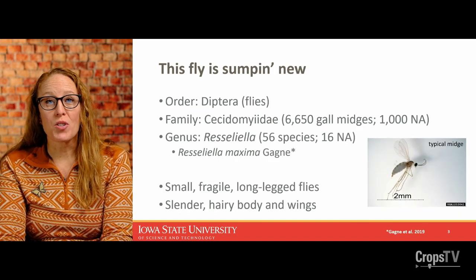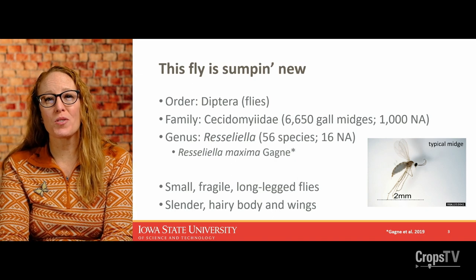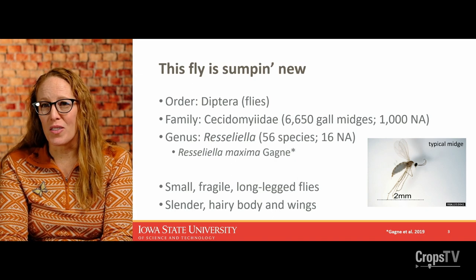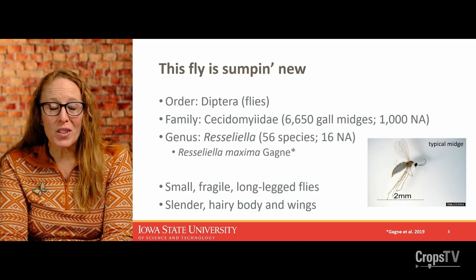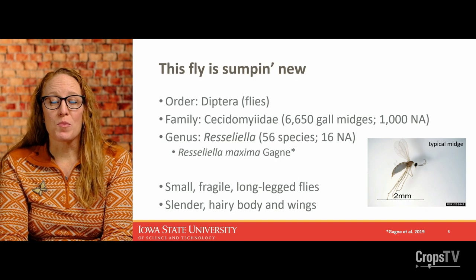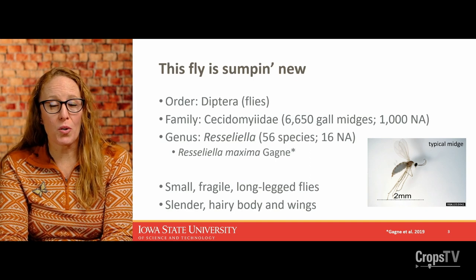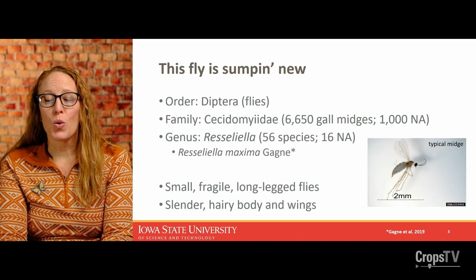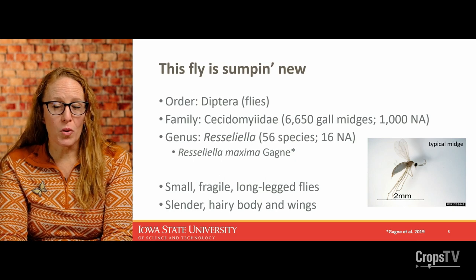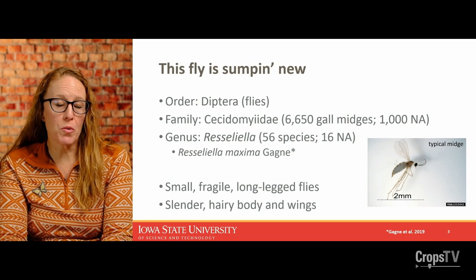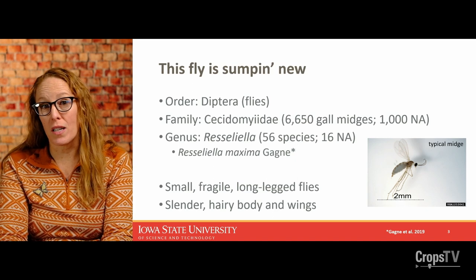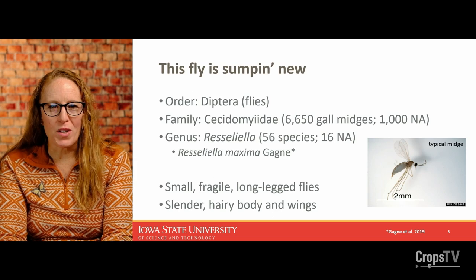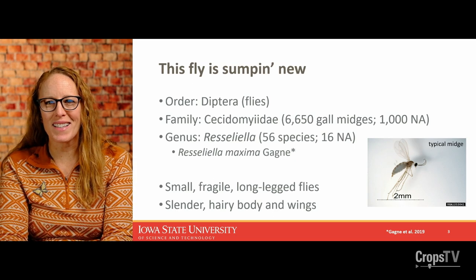This fly is brand new. There are about 6,600 different gall midges in the world and about a thousand in North America, and they kind of look like little gnats or mosquitoes. Specifically within the genus of soybean gall midge, there are 56 species around the world and 16 in North America, with soybean gall midge being number 16. Raymond Gagne, an alumni of Iowa State who focused his whole career on midge identification, did the species ID for this in 2019.